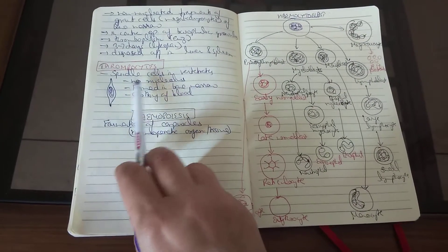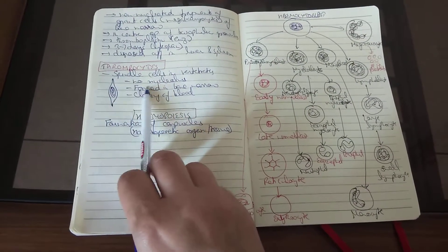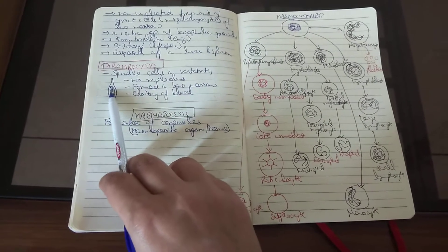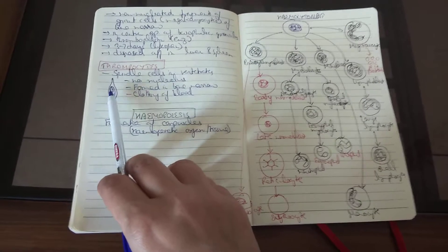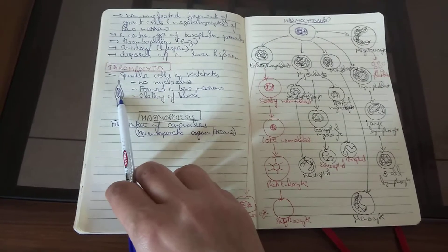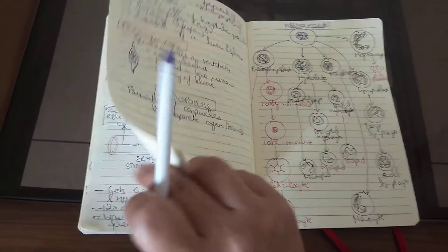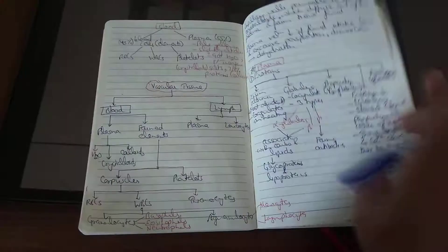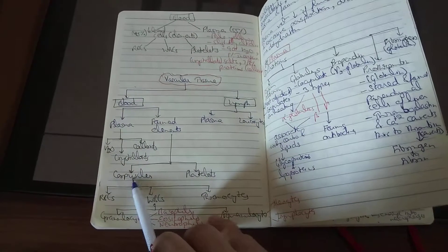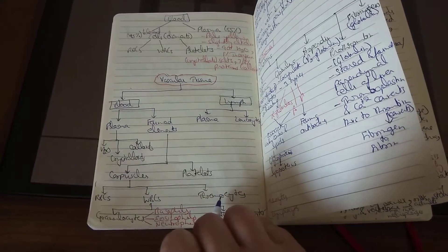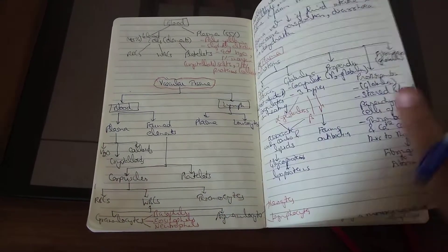Thrombocytes are the spindle cells present in vertebrates; they have a round central nucleus with no nucleolus. They are formed in the bone marrow and help in the clotting of the blood. The formed elements — corpuscles (RBCs, WBCs), thrombocytes, granulocytes, and platelets — have now been discussed, completing the composition of the blood.